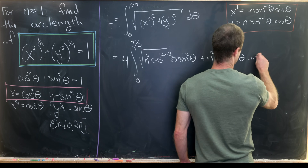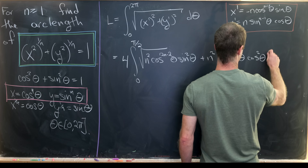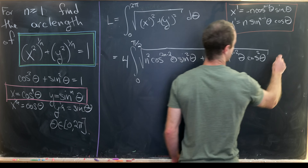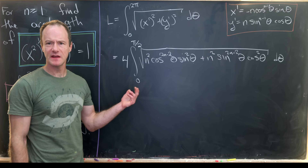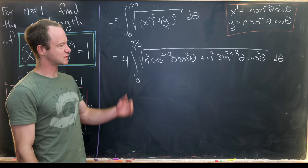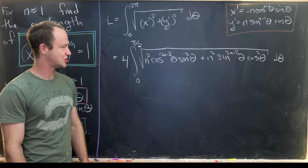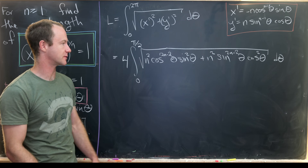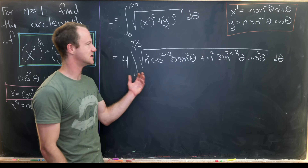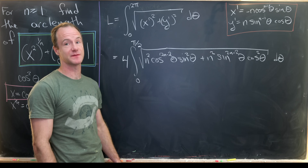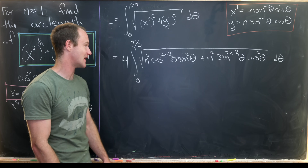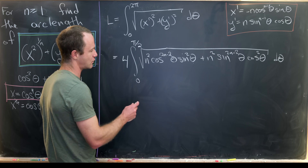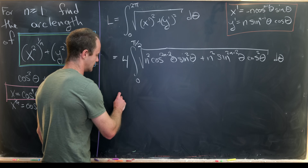So this gives us the integral from 0 to 2π. Using symmetry about the x- and y-axes — as we saw in all of our pictures — we can change this to 4 times the integral from 0 to π/2. Inside we have √(n²·cos^(2n−2)(θ)·sin²θ + n²·sin^(2n−2)(θ)·cos²θ). The n=1 and n=2 cases are special because they result in low powers of cosine and sine, meaning we can't factor in the usual way.